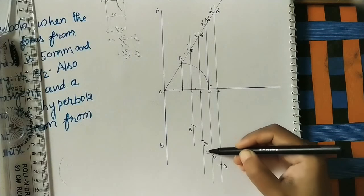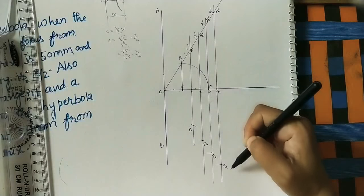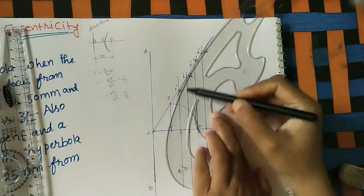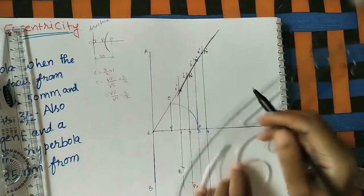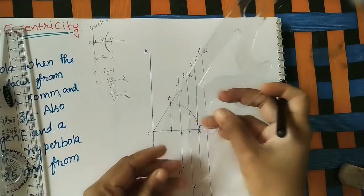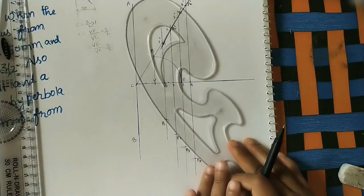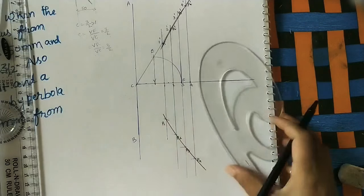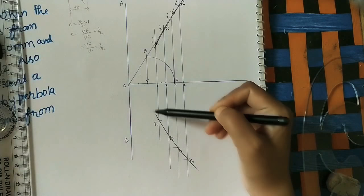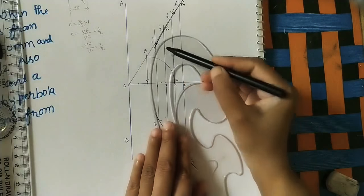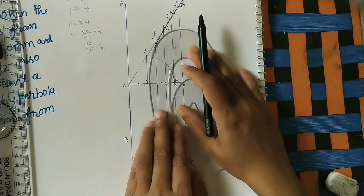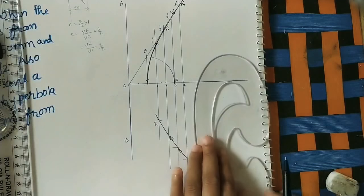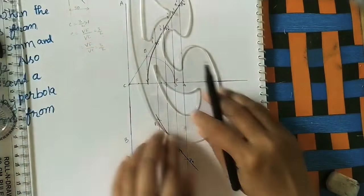Now join all P points, V point, and P-dash points to get the hyperbola. Use the French curve — keep it on these points and make the curve. Take the same part of the curve for joining the opposite points P1, P2, P3, P4. We get one arc on each side; join these through V. Use the curve through V and in the opposite direction to get the symmetrical hyperbola.